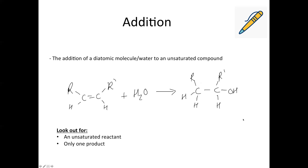If you're adding water, it can be called hydration. The water splits up into a hydrogen ion and a hydroxide ion — the hydrogen goes on one side of the double bond, the hydroxide ion goes on the other side, and you end up forming an alcohol. Again, you've got a reactant with a double carbon-to-carbon bond and you're only making one particular product.